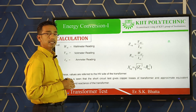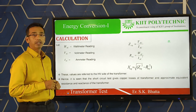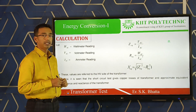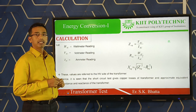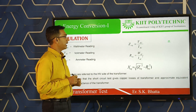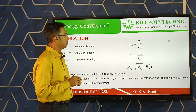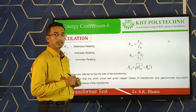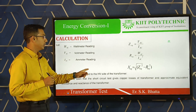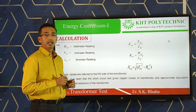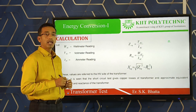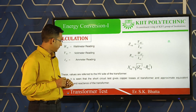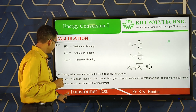For short circuit test calculations: Wsc is the wattmeter reading, Vsc is the voltmeter reading, and Isc is the ammeter reading. The equivalent impedance Zeq = Vsc / Isc. The equivalent resistance Req = Wsc / Isc². The equivalent reactance Xeq = √(Zeq² − Req²). These values are referred to the HV side of the transformer. Thus the short circuit test gives copper loss and equivalent circuit parameters.